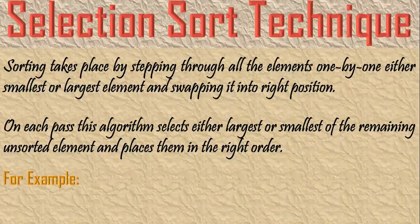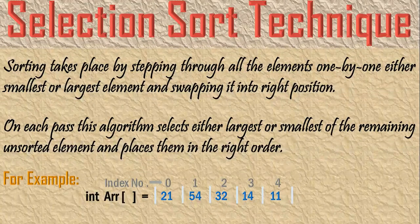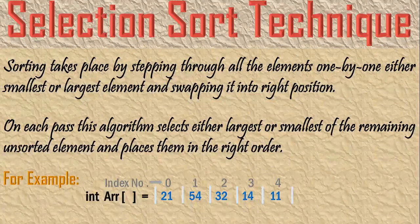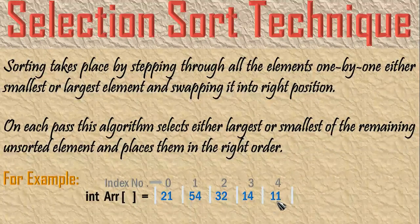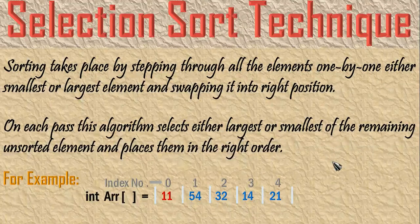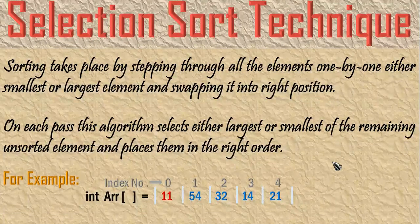For example, consider this array. Let us imagine that it needs to get sorted in ascending order. In this technique, it will search for the least value of that array and swap the value at the first index. In this example, we have 11 as the least number at index number 4. So, value at index number 4 and value at index number 0 will get swapped. There are two main steps: searching for the element and swapping. Searching will happen in the inner loop and the swapping will happen in the outer loop.